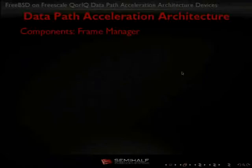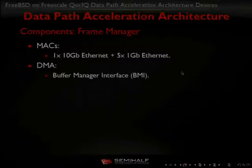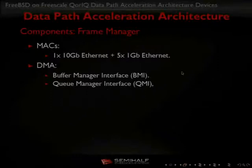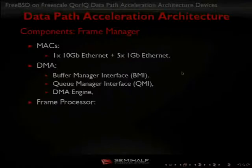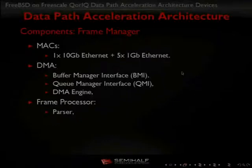The most complex element of DPAA is the frame manager. Usually one frame manager has one 10-gigabit interface and one gigabit interface, so if you have a SoC with two 10-gigabit interfaces, there are two frame managers. It has complex DMA which can use the buffer manager to allocate and free memory, and the queue manager to exchange data with other components. For frame processing, we have a frame processor which includes a parser that can extract data from packets — it can even be programmed to extract data from any kind of header, unless it is not longer than 200 bits.